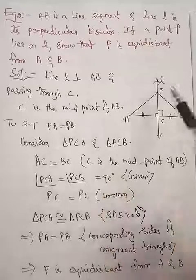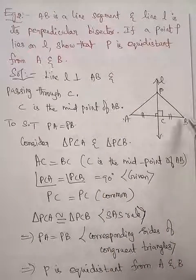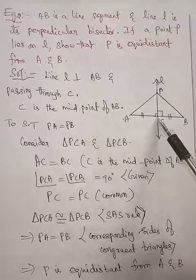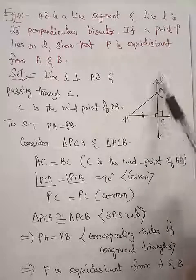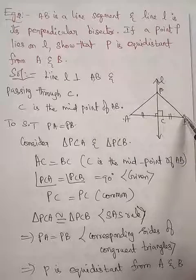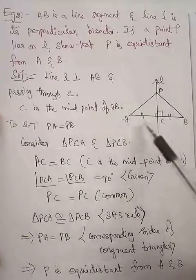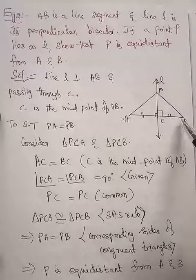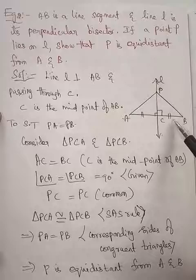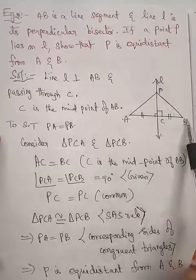So the first thing, line L is perpendicular to AB, also it's passing through C. Like that only I am constructing this line L passing through the point P and also it is perpendicular to AB. Now C is the midpoint of AB because bisector means dividing into two equal parts. So C must be the midpoint of AB.